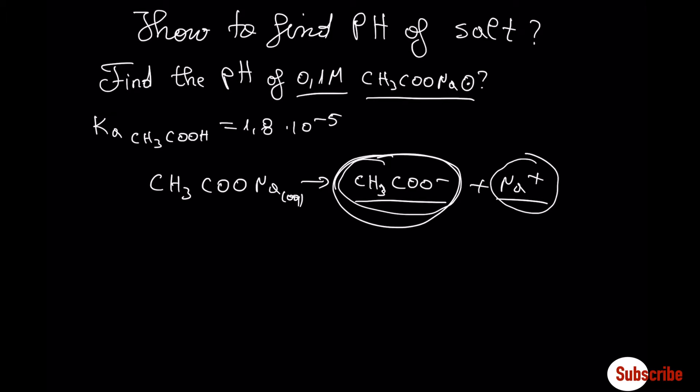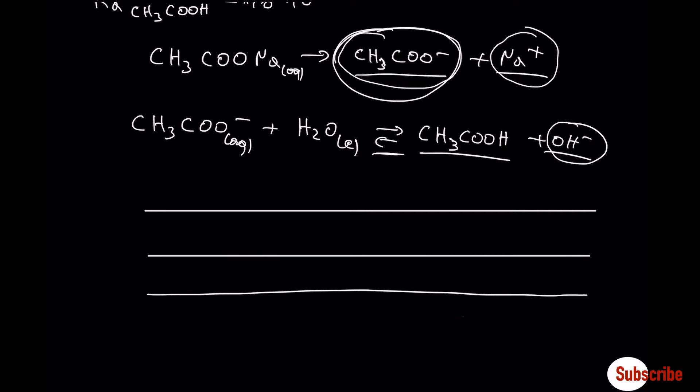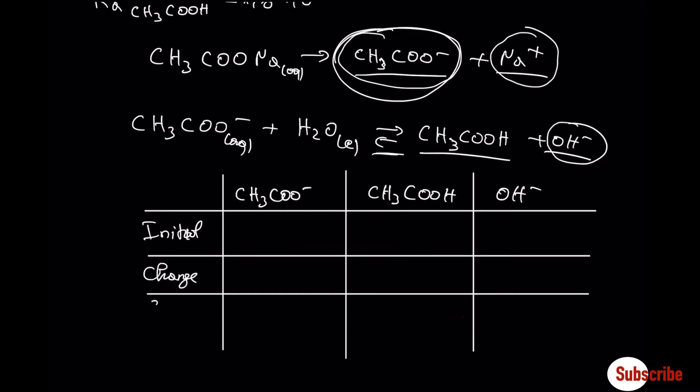So acetate anion are going to react with water molecules to form acetic acid and leaving in the solution OH-, which indicates that we expect a pH higher than 7. Since this is an equilibrium problem, we are going to build the initial change equilibrium table to solve in order to find the concentration of OH- in the solution. Water is excluded because pure liquids are not placed in the equilibrium table.